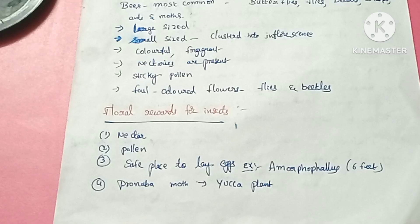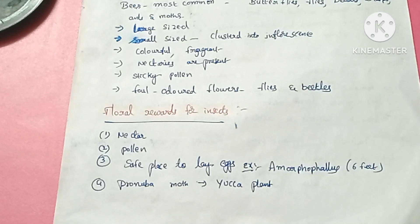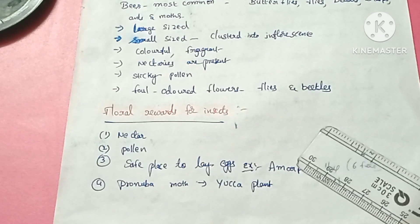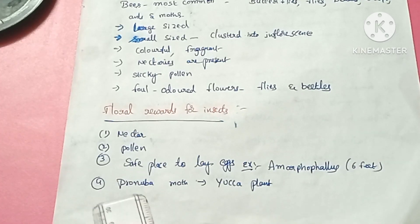The larvae of the moth come out of the eggs as the seed starts developing. This is what happens between the pronuba moth and the yucca plant — these are the floral rewards of the insects.